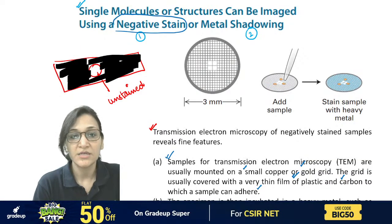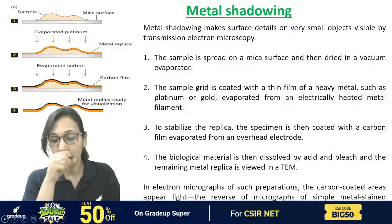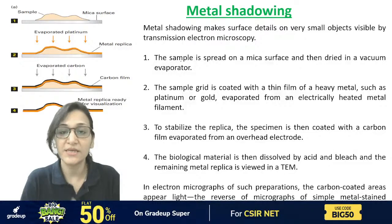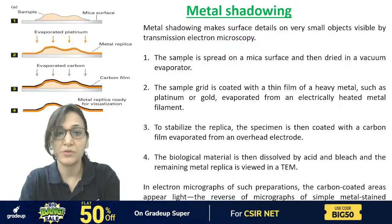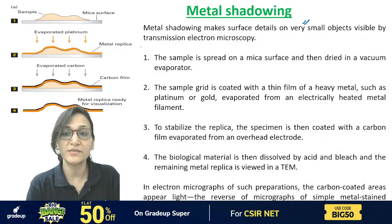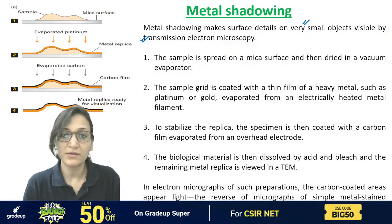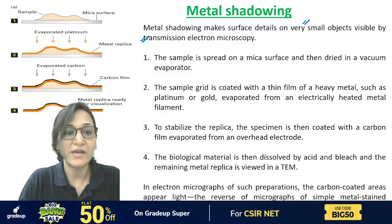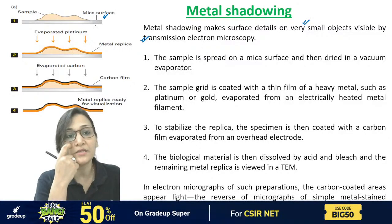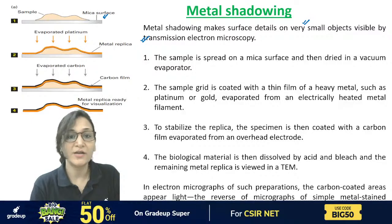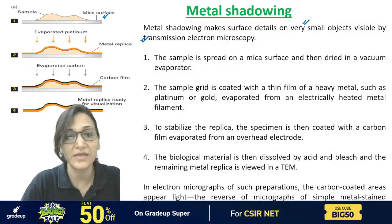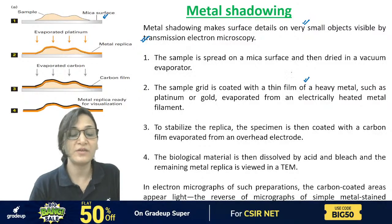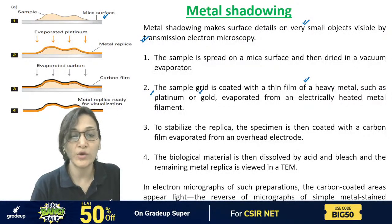That was the negative staining method. Now let's look at metal shadowing. Metal shadowing makes surface detail on very small objects visible by TEM. In this method, the sample is spread on a mica surface and dried in a vacuum evaporator. The sample is first fixed, then dehydrated. Then the sample grid is coated with a thin film of heavy metal — platinum or gold — evaporated from an electrically heated metal filament.